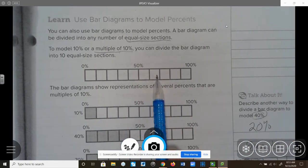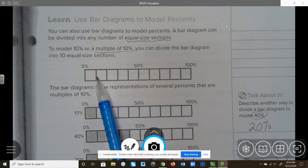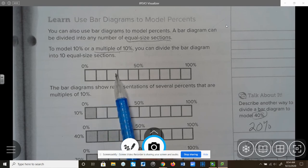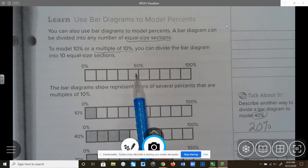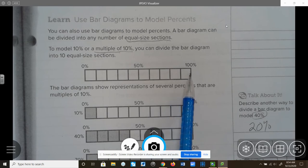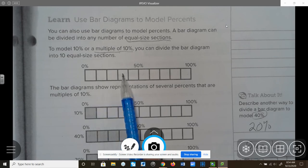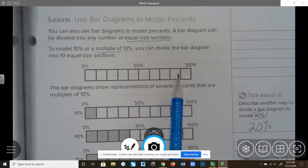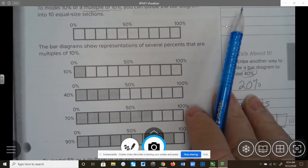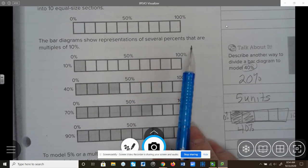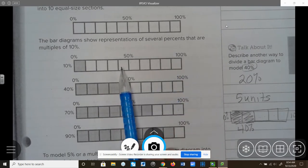So we have 1, 2, 3, 4, 5, 6, 7, 8, 9, 10. So each of these, and it's a multiple of 10. So 10%, 10%, 10%, 10%, 10%, 10%, which is 1, 2, 3, 4, 5, so 50%. And the rest of these are equal 10% until we get to 100. So they're multiples. We can count by 10. 10%, 20%, 30%, 40%, 50%, 60%, 70%, 80%, 90%, 100%. The bar diagram shows representation of several percents that are multiples of 10. And like I just did in the upper one, one unit means 10%. Four units, 40%. 70% would be 7 units. 90% would be 9 units.